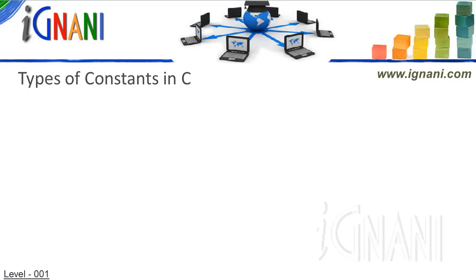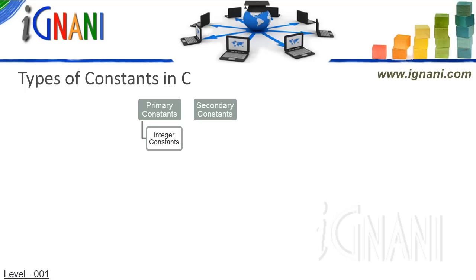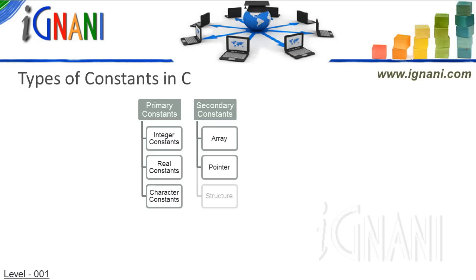Types of constants in C. Constants in C can be broadly divided into 2 categories: primary constants and secondary constants. Primary constants are further categorized as integer, real, and character constants. Secondary constants are further categorized as array, pointer, structure, union, enum, etc. Variables are classified in the same way as constants, except that their values can change during program execution. I will cover these in detail later on in this tutorial.